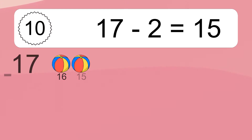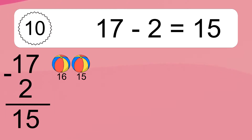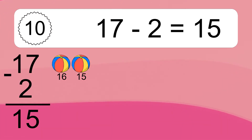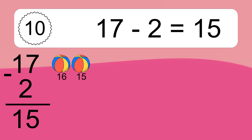17 minus 2 equals what? 17 minus 2 equals 15. Let's count it: 16, 15.